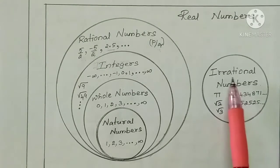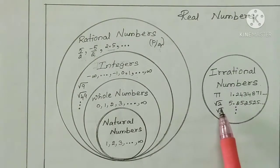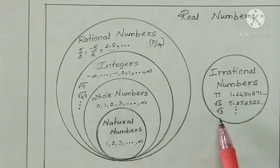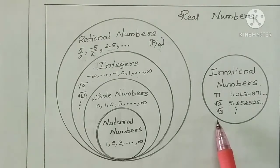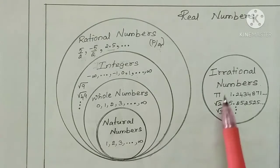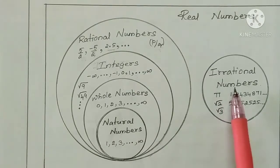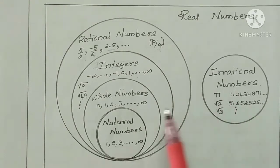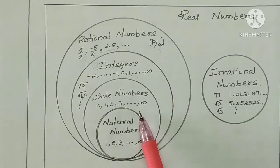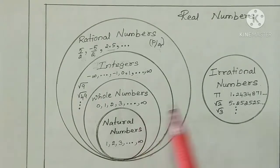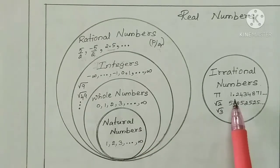If you divide the decimal values, it will be irrational numbers. That means root 2, root 3, root 5, root 7, root 11 — we can use these root numbers. The irrational numbers are a set. And the rational numbers are also a set.